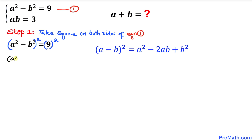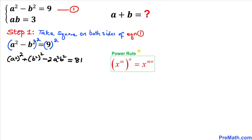We can write this as (a squared) whole power 2, plus (b squared) whole power 2, minus 2 times a squared times b squared, and on the right hand side 9 squared is 81. Now let's recall the power rule of exponents — the two nested exponents can be multiplied out.